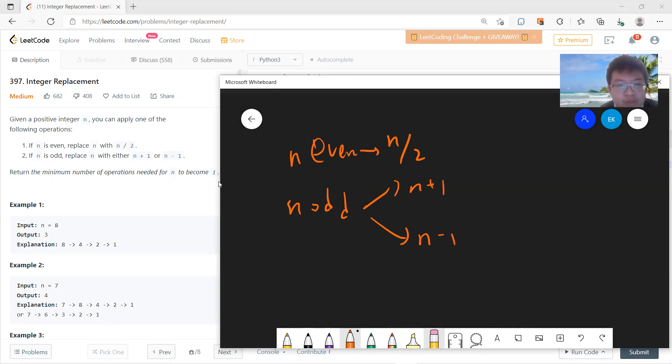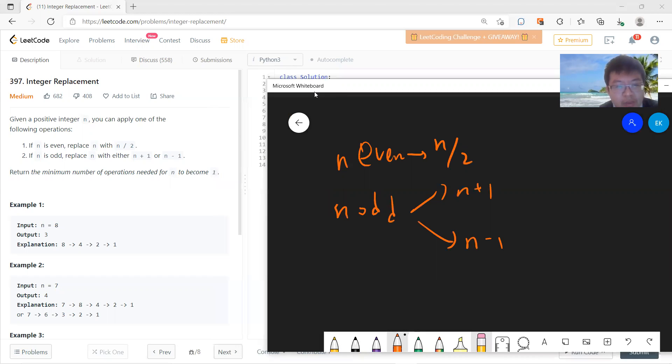Okay, and you need to return the minimum number of operations such that n becomes 1. Okay, so n equals 8 is trivial, right, so just 4 to 1.